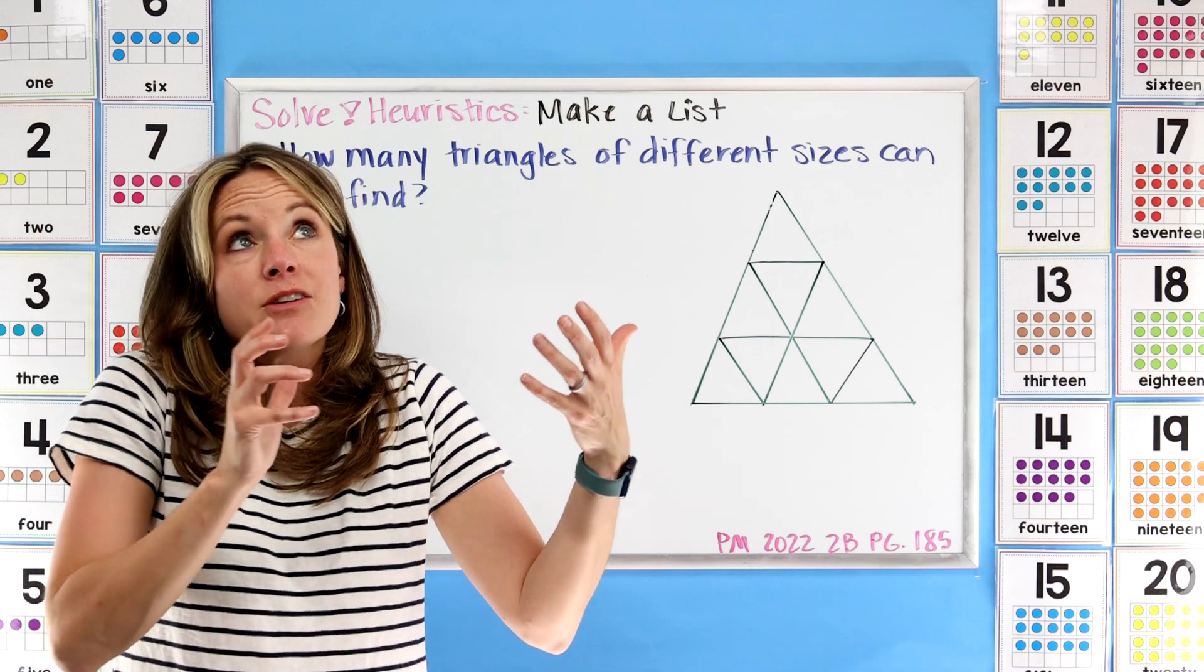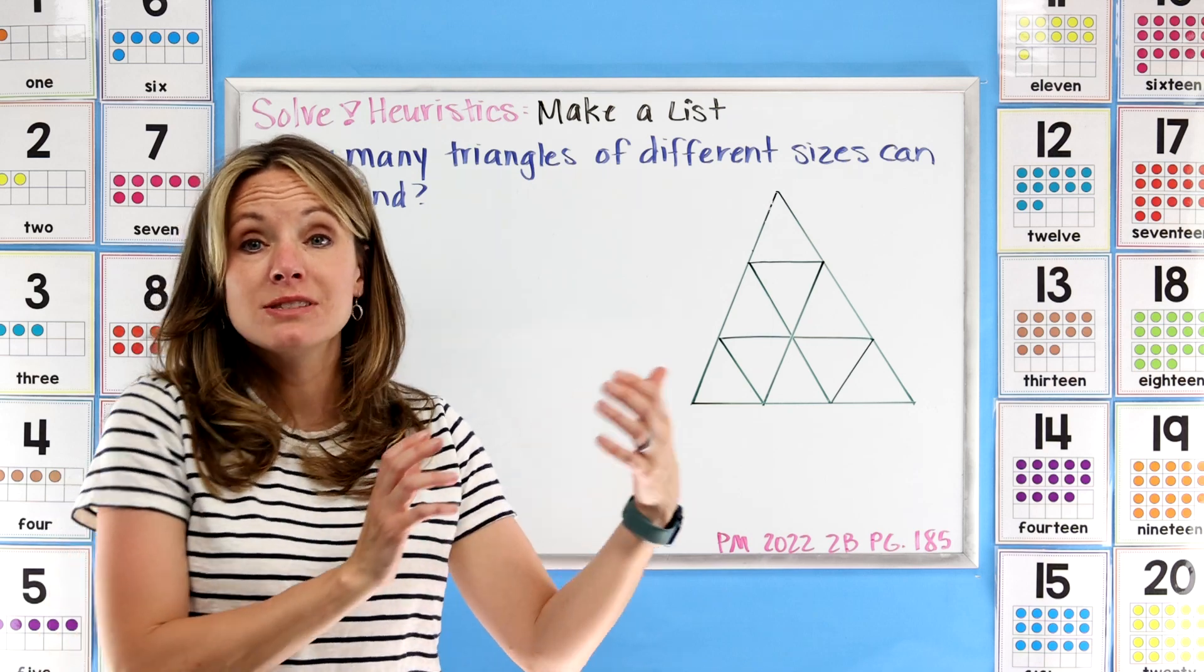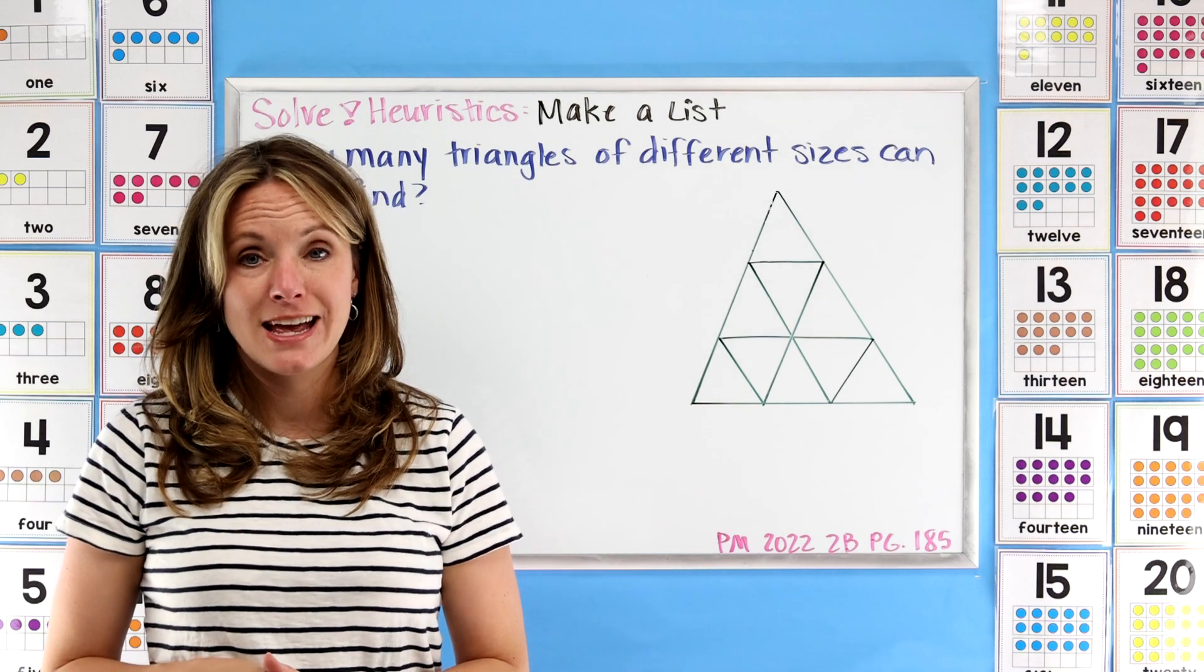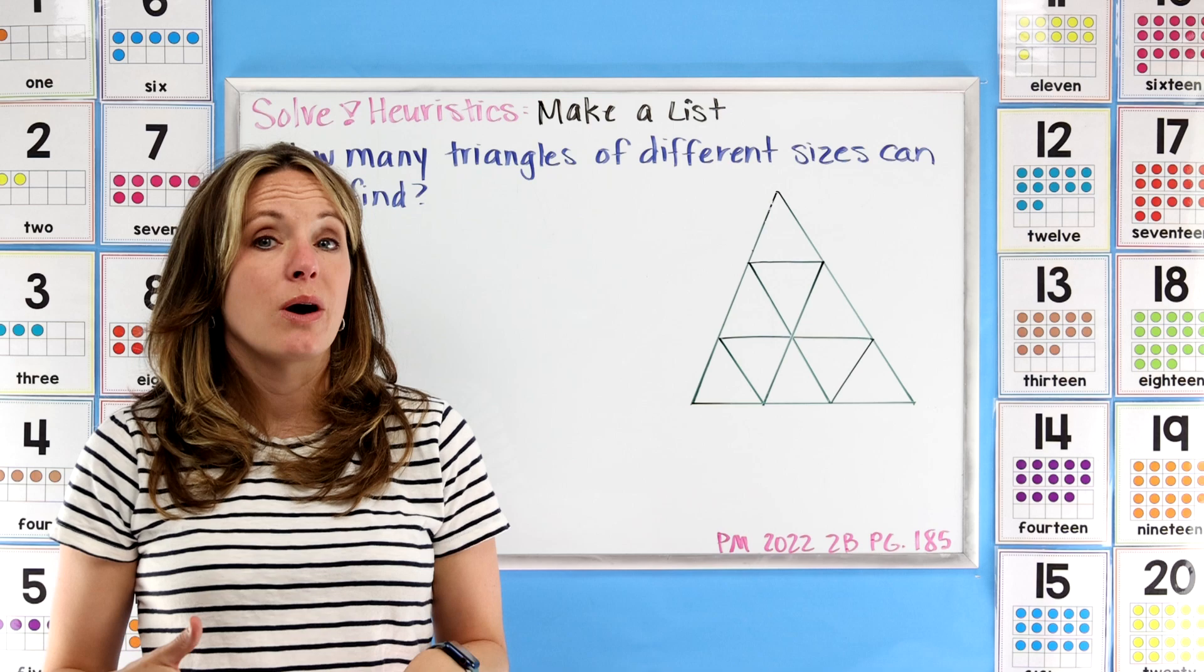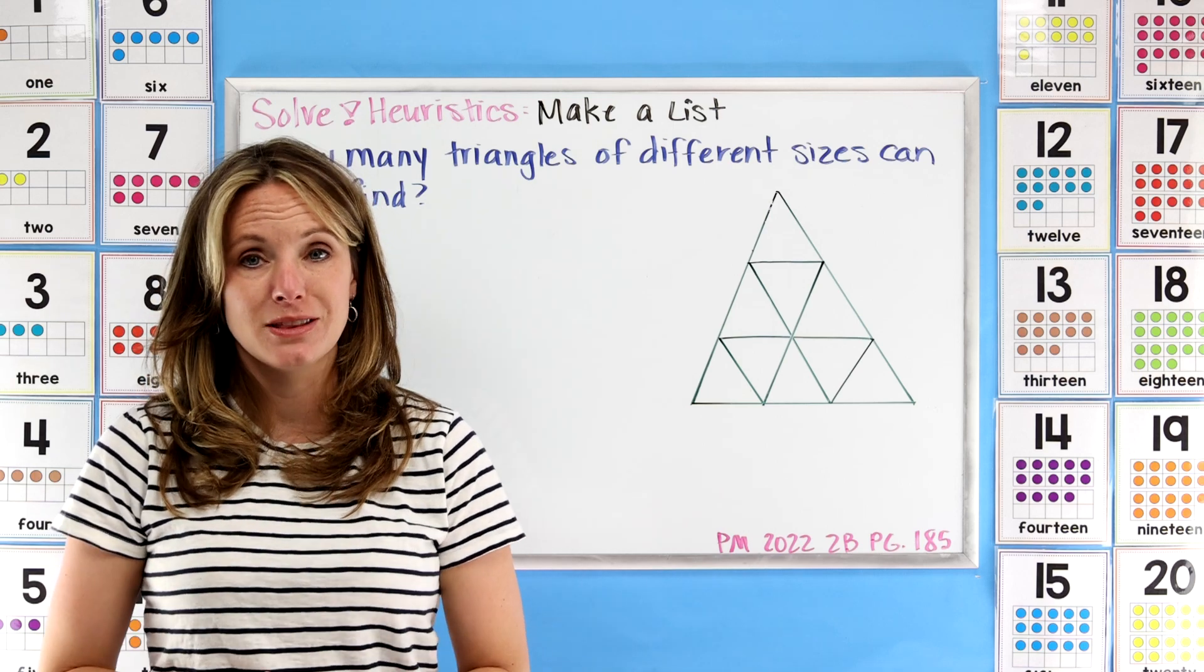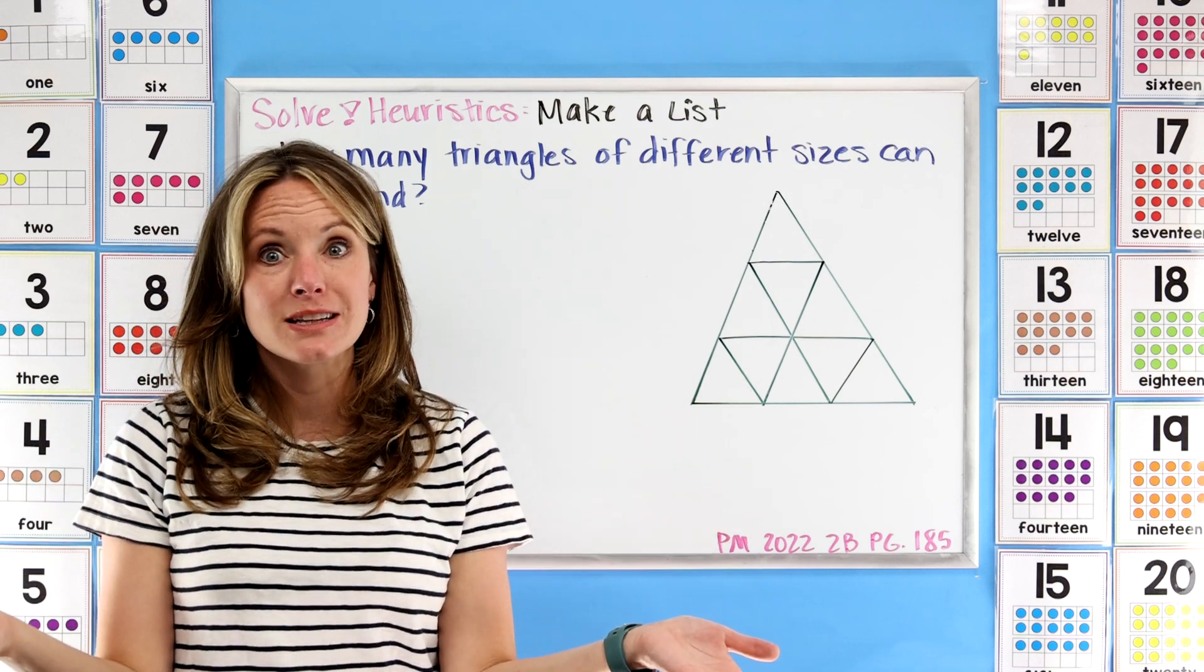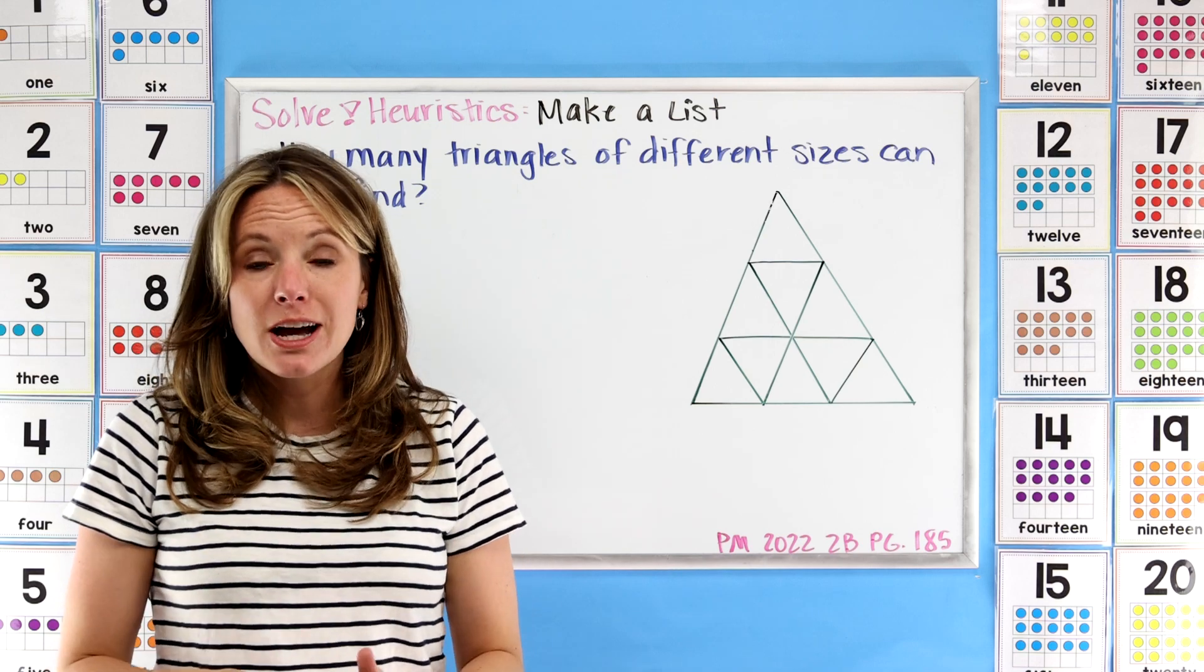So our list might be: if I'm looking at triangles this way, how many can I find? If I'm looking for triangles this way, how many can I find? And when we come back I'm going to show you how I made my list, but I want you to be creative and think about what your list could look like. Because it's okay - it can look different and you can have a totally different kind of list than I do, however it helps you to keep your information organized.